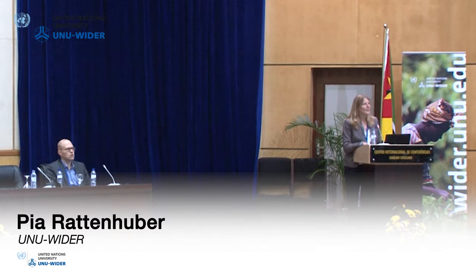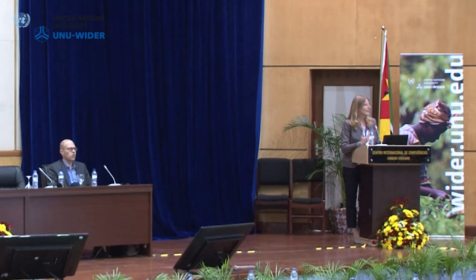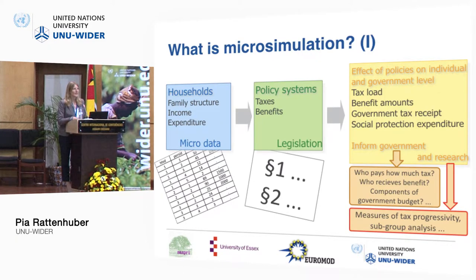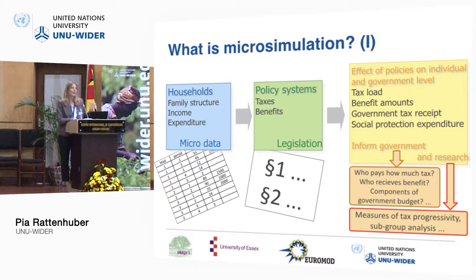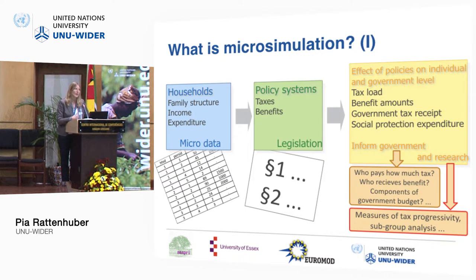So, what is microsimulation? It's basically a technique where you use a household survey that has information on family structure, on income and expenditure of the household, and then you bring these micro data to the policy system. You take the social security code and the tax code to the data in order to know how much is the tax load on each family. You can bring that up with representative data to the national level to know the tax load, how that comes out as revenue for the government, but also how much social protection costs the government. This is important for government but also very good information for research.